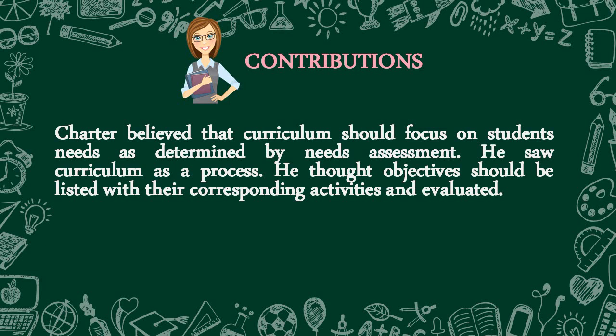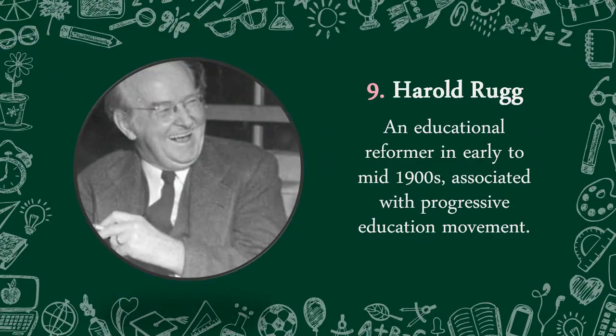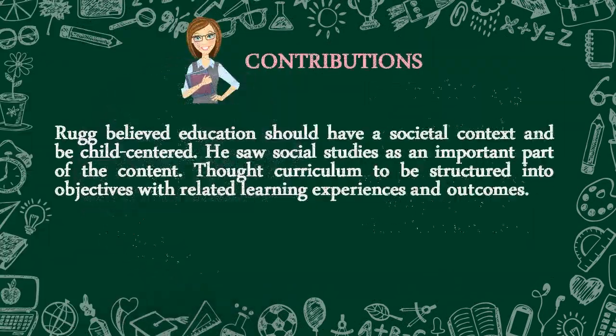Our ninth Theorist is Harold Rugg. He is an educational reformer in the early to mid-1900s associated with the progressive education movement. Rugg believed education should have a societal context and be child-centered. He saw social studies as an important part of the content, and thought curriculum should be structured into objectives with related learning experiences and outcomes.